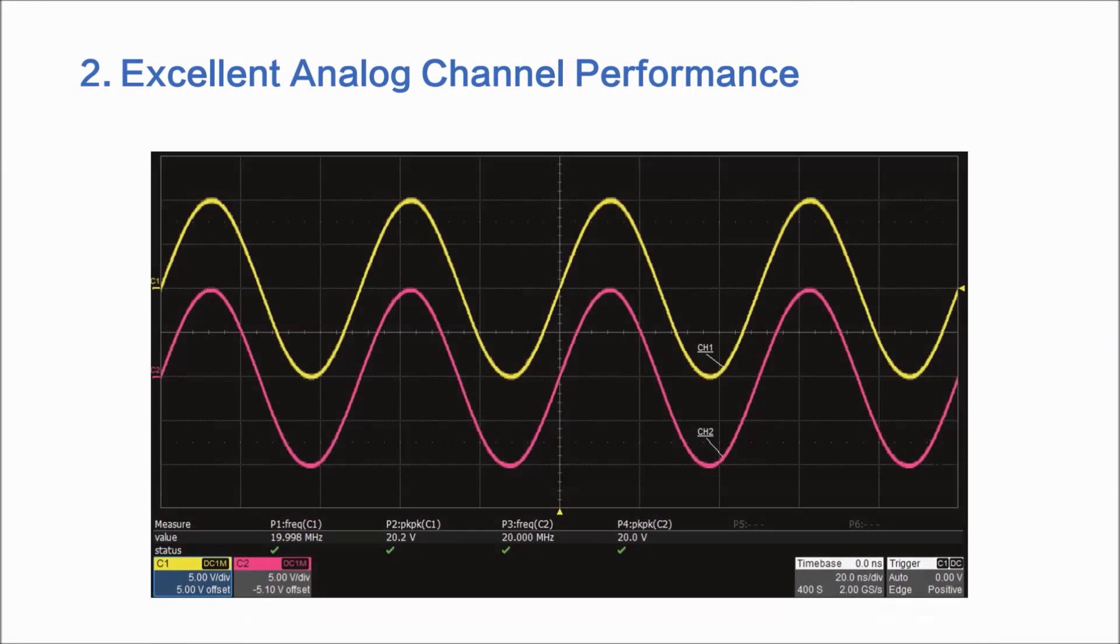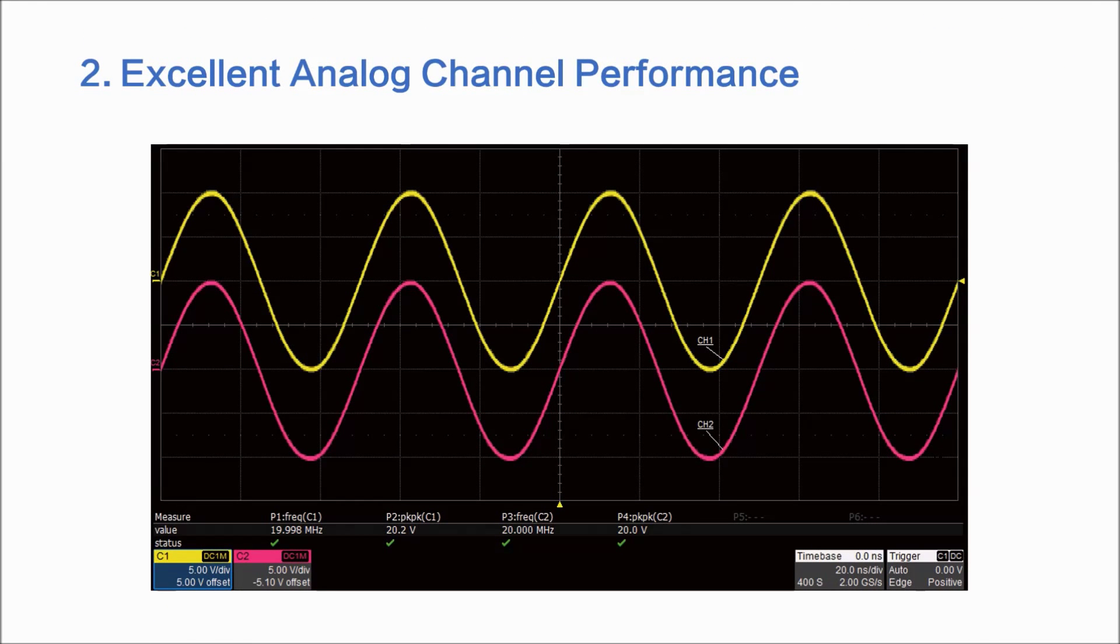The SDG2000X also has a large output capacity. It can guarantee output amplitude up to 20 volts peak to peak on both channels, even at 20 MHz.